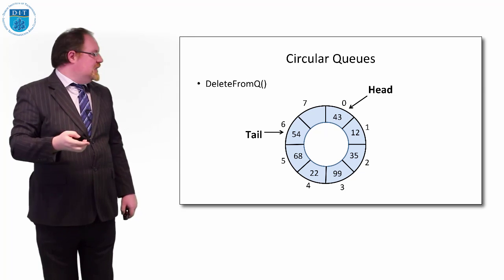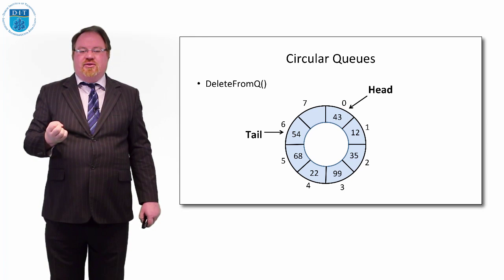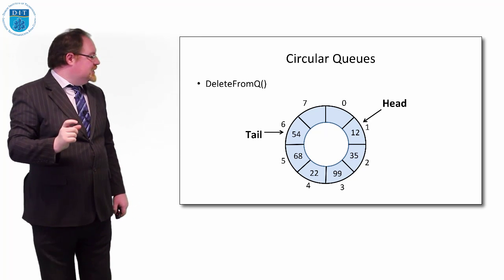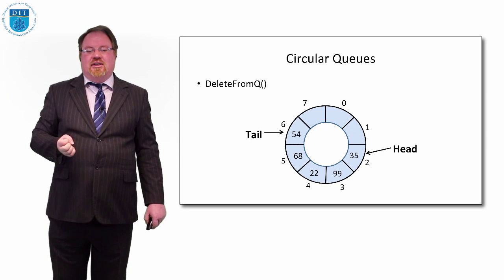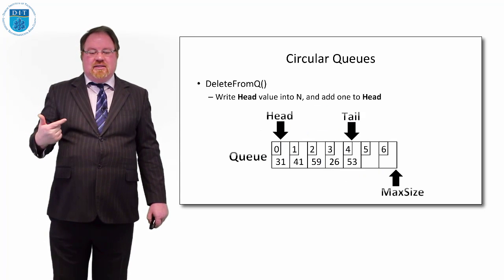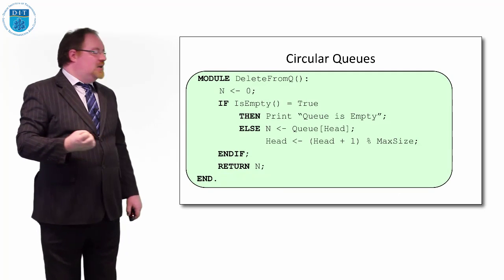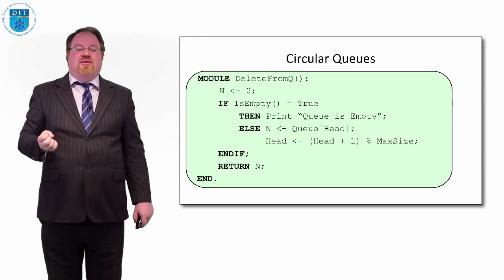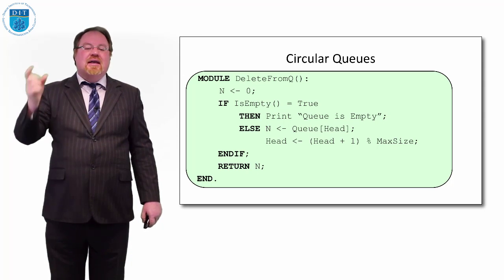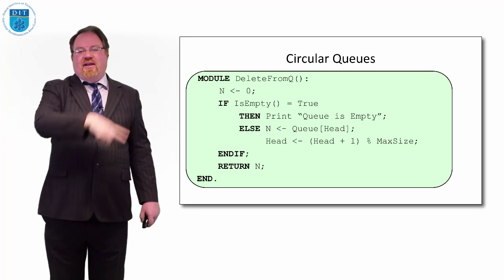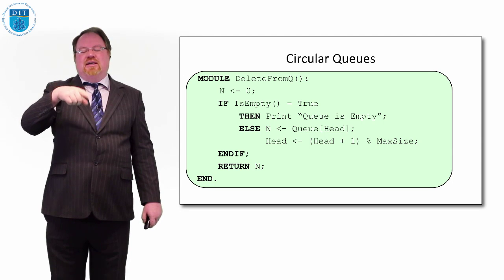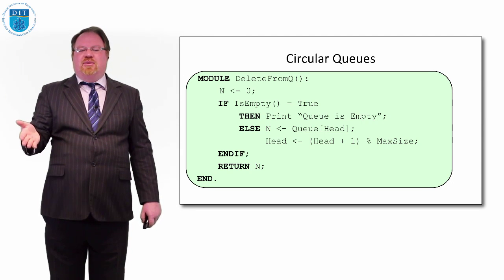To delete from the queue: the head points to the current front value. If I serve that value, head gets incremented and the value is returned. In code: if the queue is empty, print 'queue is empty'; otherwise store queue[head] in variable n, then increment head using head = (head + 1) % max_size, so if head is at seven and we add one, it wraps down to zero.